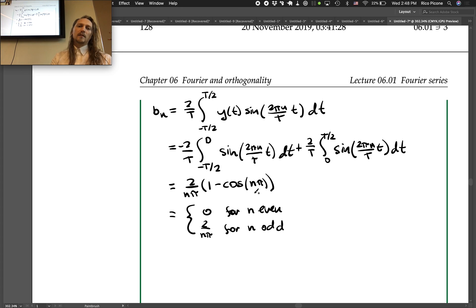Because when n is odd you've got cosine of pi is negative 1, right? So then you add 1 and 1, so you get 2, 4 over n pi.